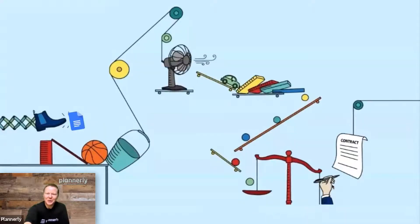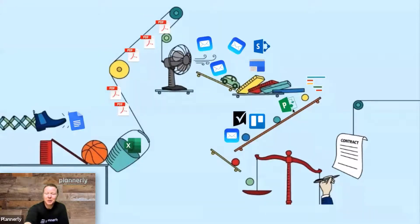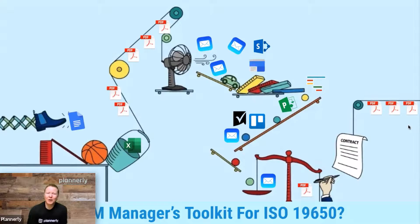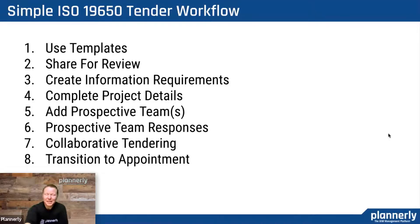Unfortunately, a lot of projects start with a BIM execution plan rather than an exchange information requirement. In a Rube Goldberg type machine, when we start to add the scope in an Excel or spreadsheet form, then put different PDFs out for tender — maybe sent via email or using SharePoint — and then teams compile responses and understand their resource capability and capacity to go to contract, there are lots of different ways of doing this. But is this the right management set, the BIM manager's toolkit for following this workflow? We didn't think so. So we started to look at how we could simplify the ISO 19650 workflow with a platform. Right now we'll take you through eight steps in the tender workflow to make it more simple.